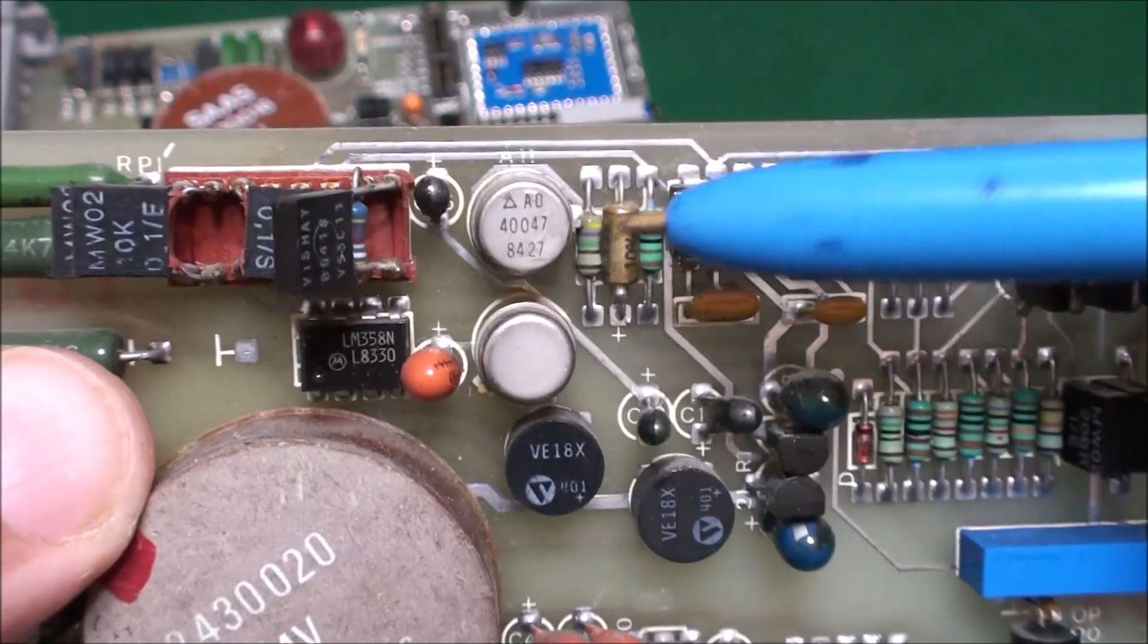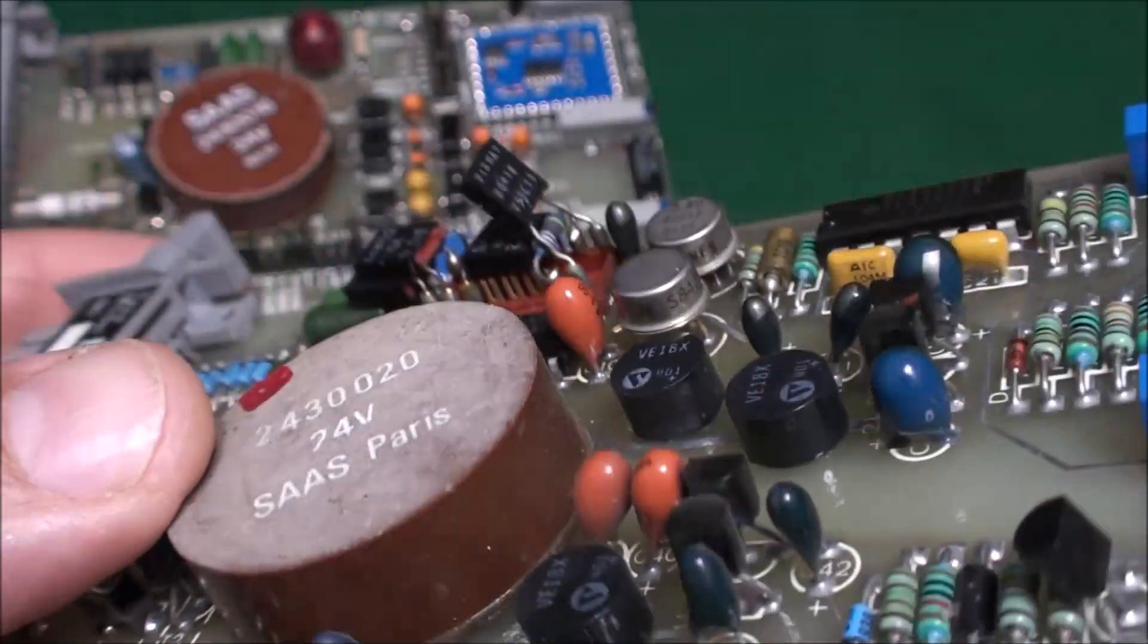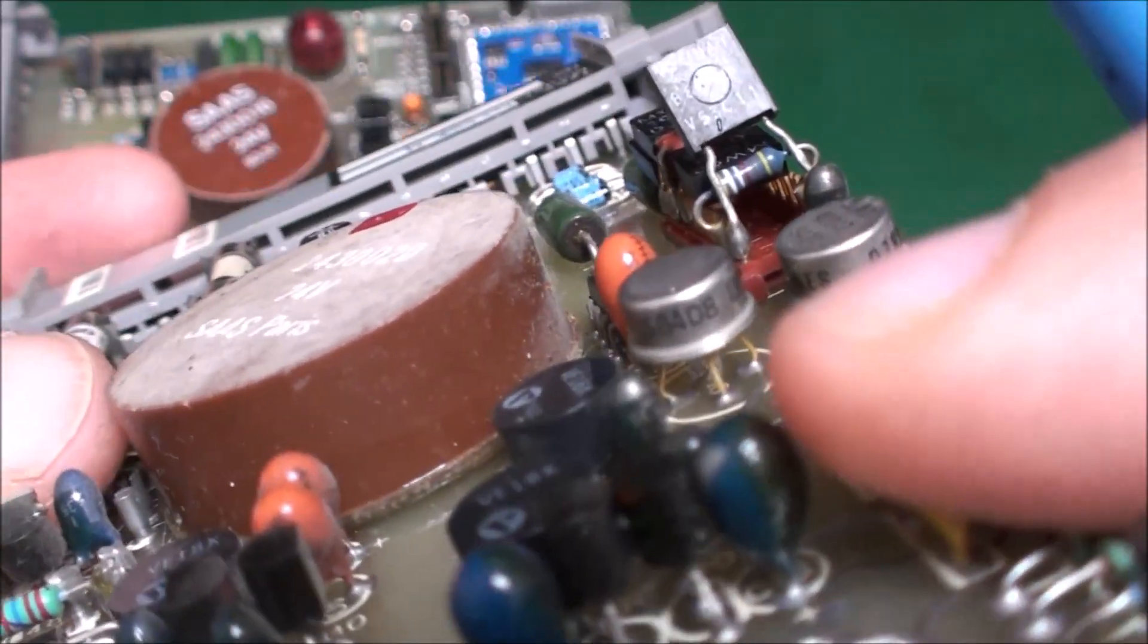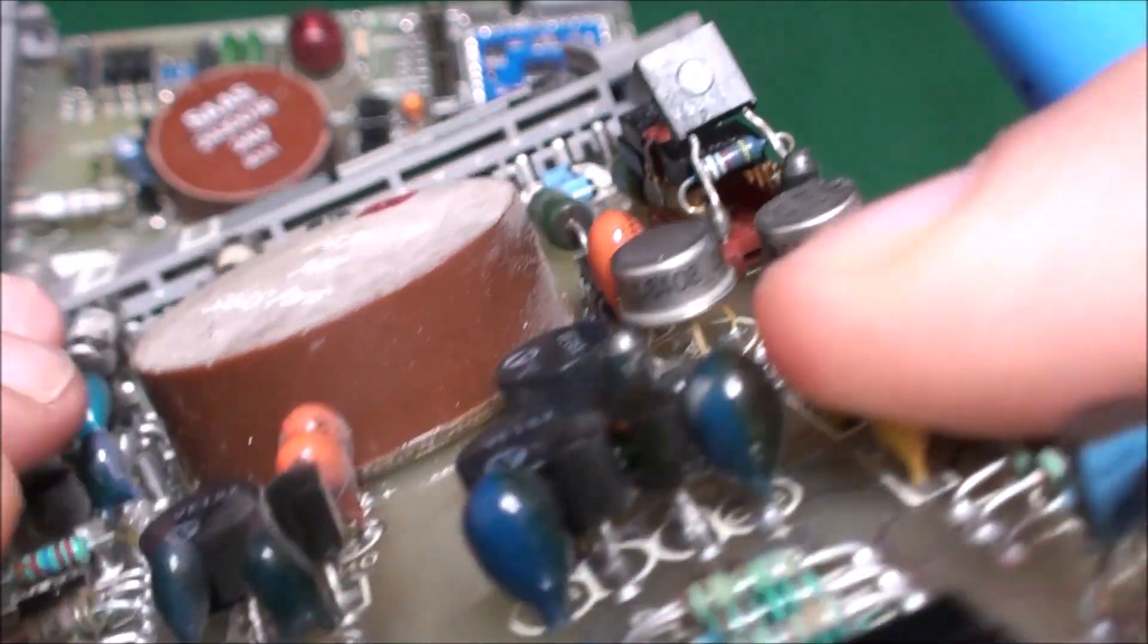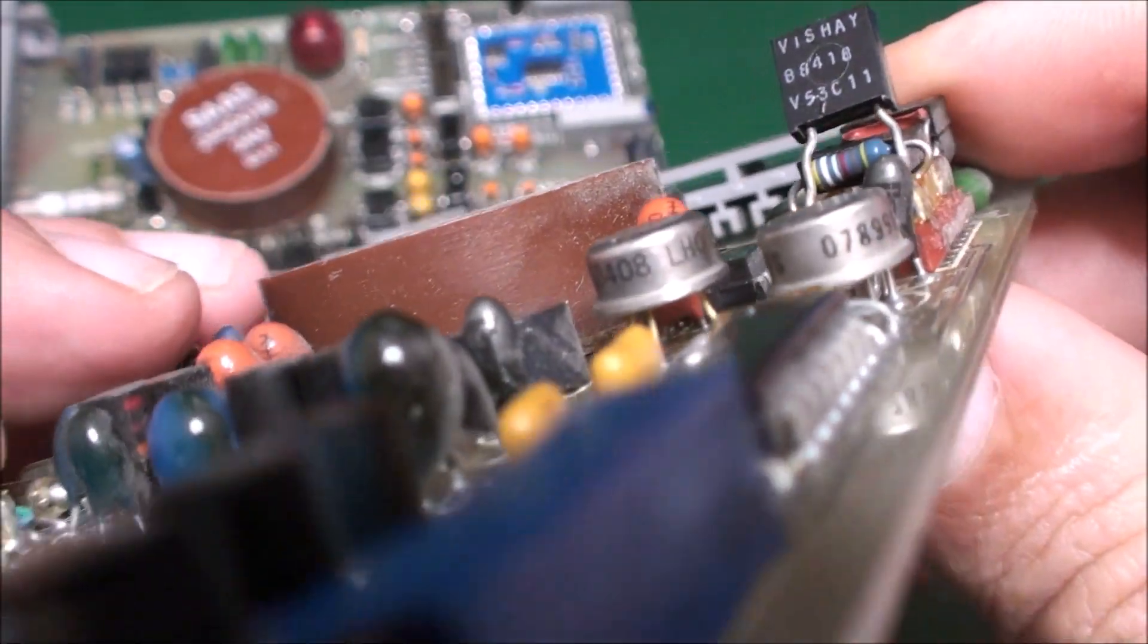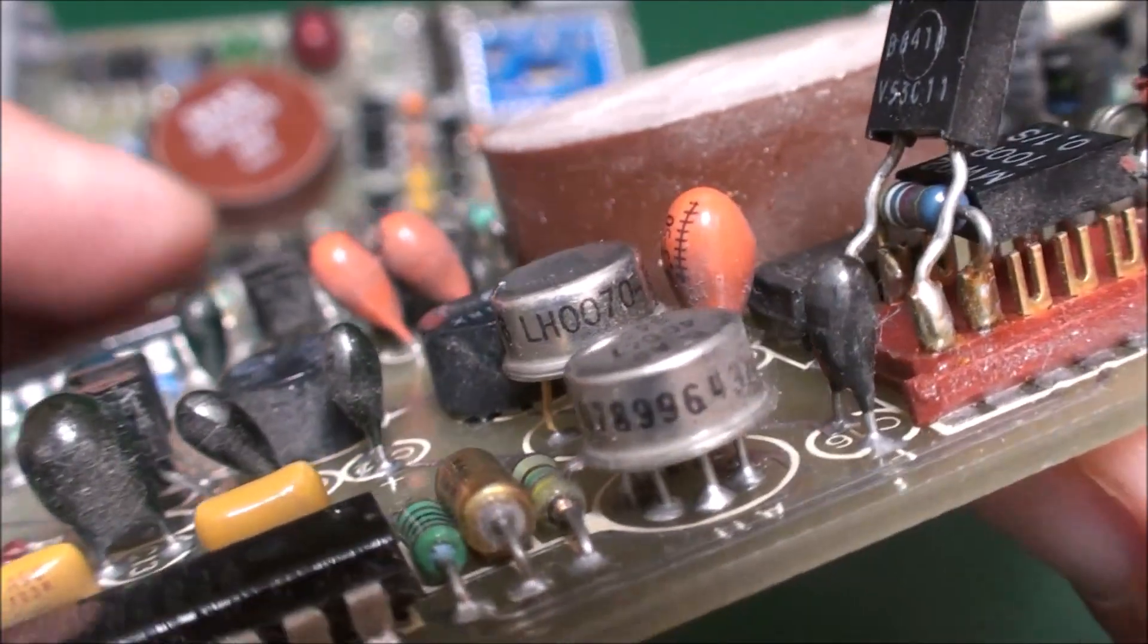And beside we can find a 10V voltage reference, LH0070. You can also see high precision common resistor. But wait, a voltage reference on this junk? I will think about my op-amp another time.